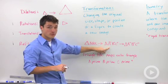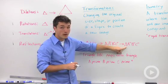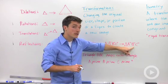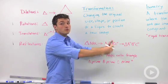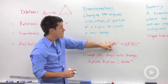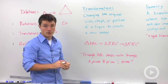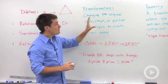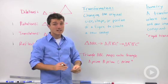Let's say you did another transformation. Then that would become triangle A double prime, B double prime, C double prime. So every time you go through a transformation, you're going to have one more prime on each of your vertices. So keeping this in mind, you can perform any type of transformation.